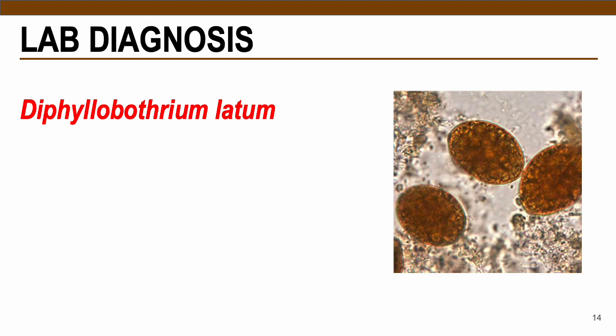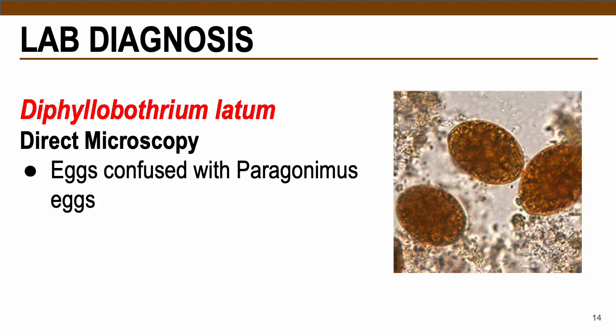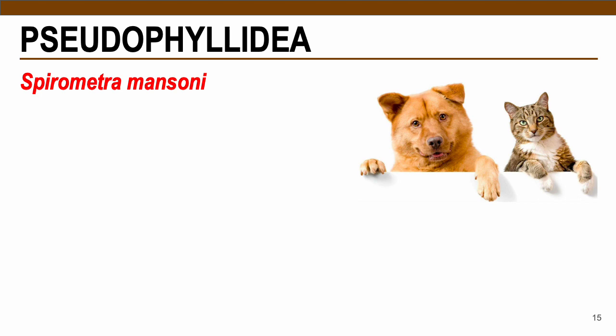The infective stage of D. latum is the plerocercoid or sparganum. The pathology is called diphyllobothriasis, associated with vitamin B12 deficiency or megaloblastic anemia, and nonspecific gastrointestinal problems such as abdominal pain and diarrhea. For diagnosis, direct microscopy is used, but since eggs can be confused with Paragonimus eggs, it is important to assess the adult worms instead.